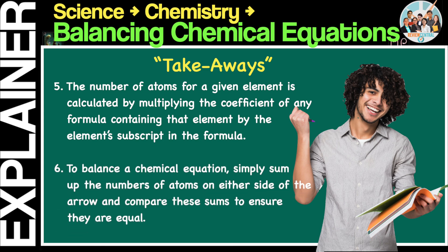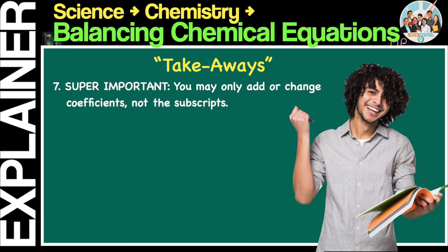6. To balance a chemical equation, simply sum up the numbers of atoms on either side of the arrow, and compare these sums to ensure they are equal. 7. This is super important, you may only add or change coefficients, not the subscripts. 8. You may add or change the coefficients on either or both sides.